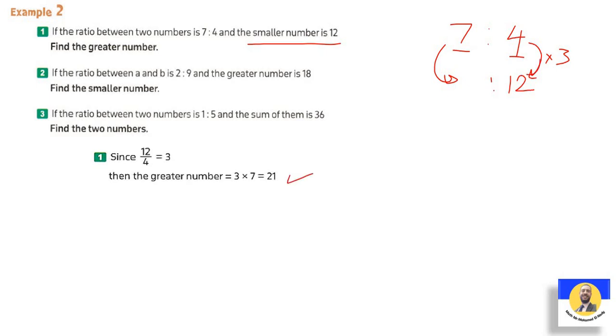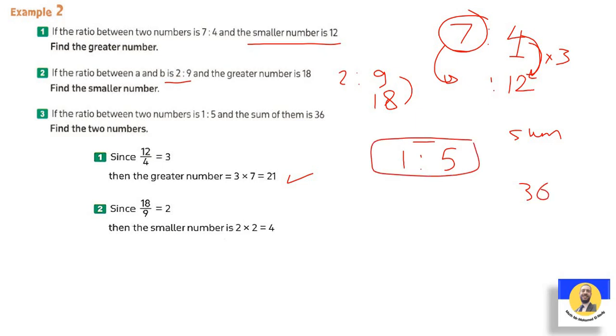Next: if the ratio is 2 to 9 and the greater is 18, then 18 divided by 9 is 2, so 2 by 2 equals 4. Question 3: if the ratio between two numbers is 1 to 5 and the sum is 36. Pay attention - they give you 1 to 5 and the sum is 36. First, find the sum: 1 plus 5 equals 6. Then 36 divided by 6 equals 6. So we multiply each by 6. So the two numbers are: first one 1 by 6 is 6, and second 5 by 6 is 30.